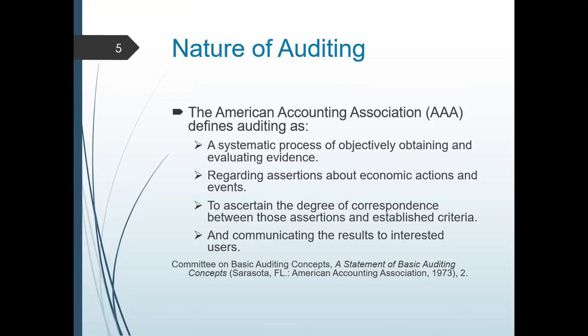Now we go to the definition and nature of your auditing. According to AAA or American Accounting Association, your audit is a systematic process of objectively obtaining and evaluating evidence. Why is it a systematic process? Because before you do your audit, you have a plan, and your plan is to be followed — that's why you have a systematic process. Next, objectively obtaining — why is it objective? Because you have criteria.